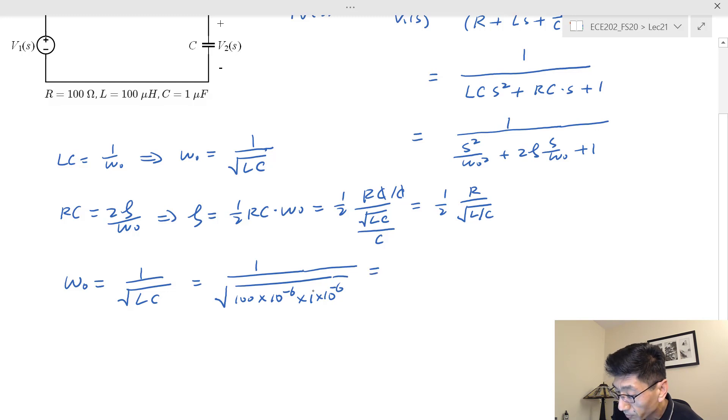We have 100, we take the square root that's 10, and 10⁻⁶ squared and then take the square root that's 10⁻⁶. So we have 10 to the power of...